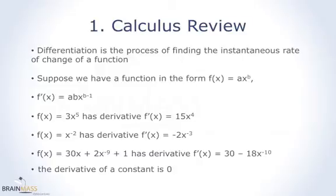We'll start with the simplest polynomial function. f(x) = ax^b. When we differentiate that function, we first multiply the coefficient, so the coefficient would be a, by the exponent. So the exponent would be b. So we say a times b.